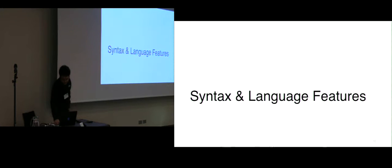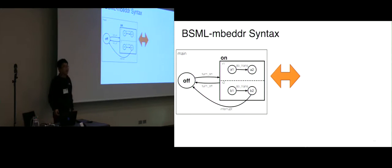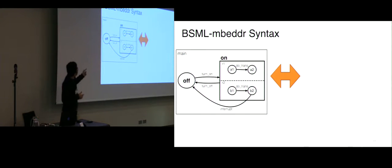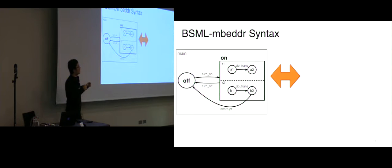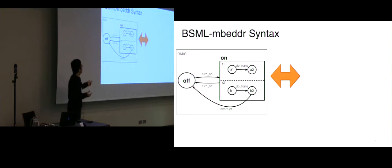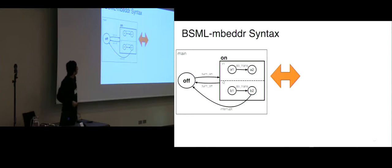Here's the syntax and language features of the language. I'm going to give some examples of what BSML Embedder code looks like. On the left side, we have a main region. Within this region we have two states: an off state and an on state. The off is a simple state, and the on state is a composite state which has two concurrent regions, R1 and R2. Within each concurrent region we have two states, and there's a bunch of transitions among those states.